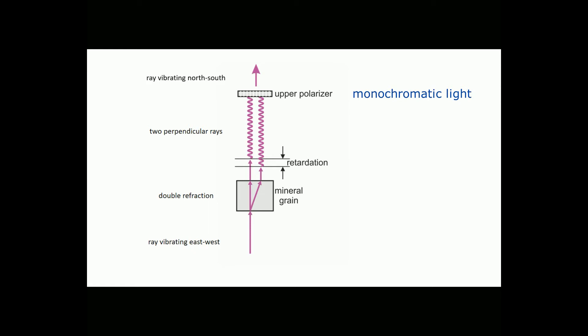If they are in phase, they can add constructively and we see light. And if they are out of phase, they can add destructively and we will see less light or no light at all. The amount of light we see will change during stage rotation because the intensities of the two rays change. The grain will go extinct every 90 degrees and it will have maximum brightness halfway between extinction angles.